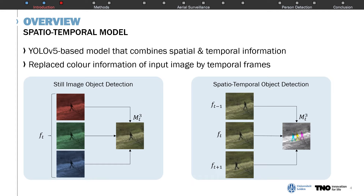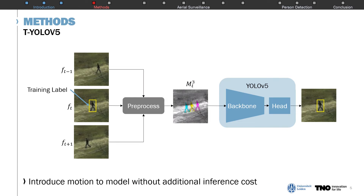Furthermore, as appearance features are still included in the model input, the ability to detect stationary objects is not lost. Based on the spatial-temporal idea, we developed two model architectures. The first, called T-YOLO-V5, uses the same model architecture as the baseline YOLO-V5 model but is now trained on the temporal input images. The model is trained to locate objects in the middle frame and does not require the use of labels from the added support frames. Using this architecture, we can introduce motion information to the object detection model without additional inference cost compared to the single-frame model.